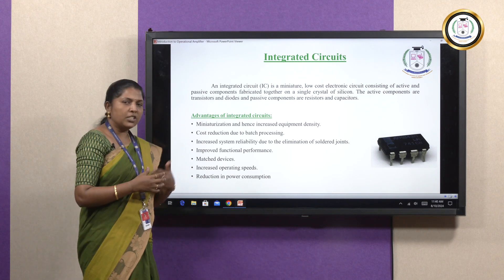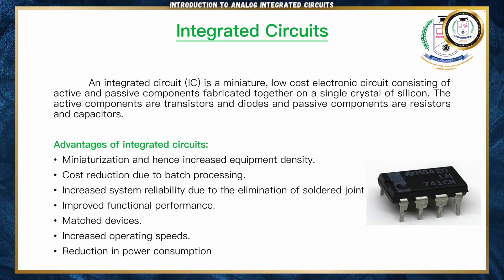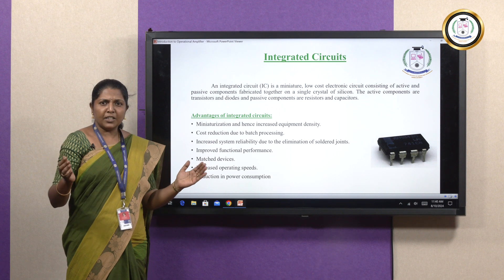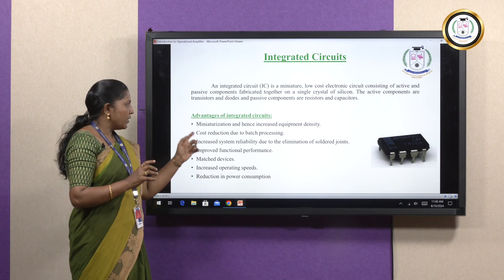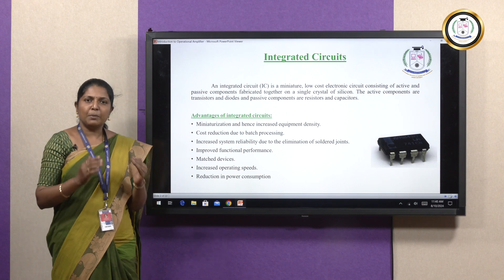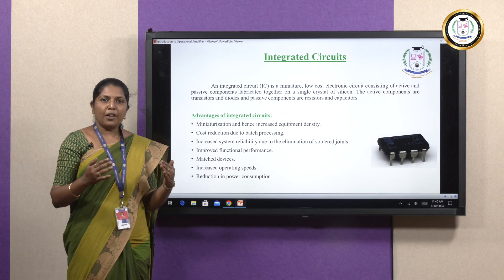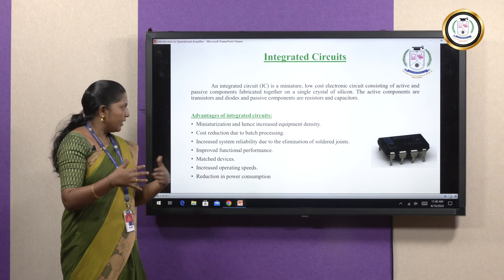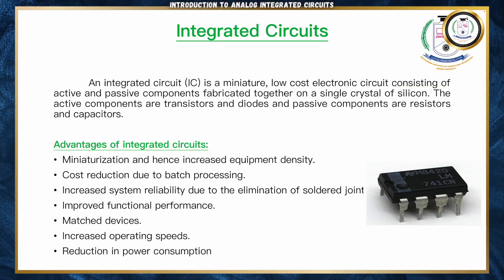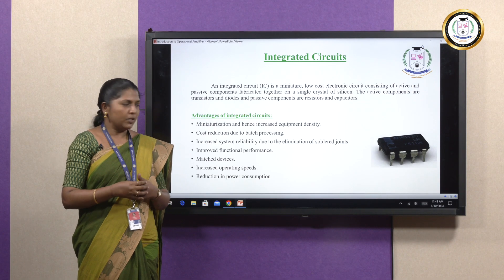What is the advantage of integrated circuits? First, it is miniaturization and hence increased equipment density, which means that large electronic circuits are consolidated into a smaller chip or IC. Because of this miniaturization property, you can fabricate more number of devices in an electronic circuit. Second, these ICs are manufactured in a batch or bulk process, so obviously the cost of ICs will be reduced.